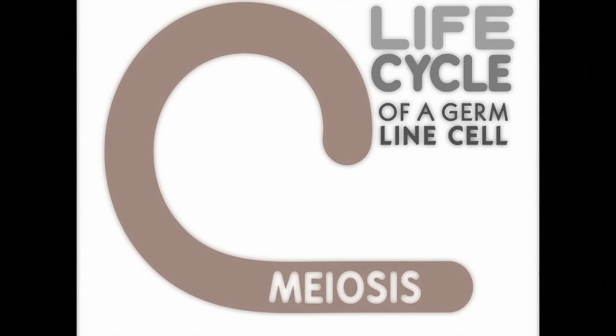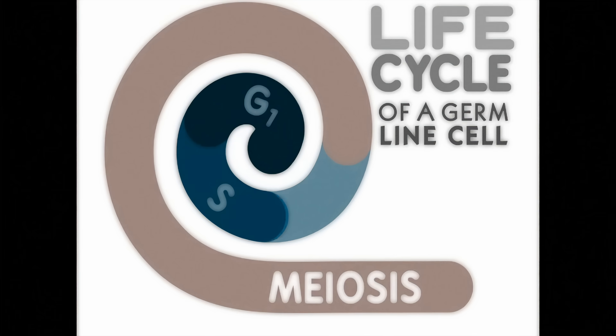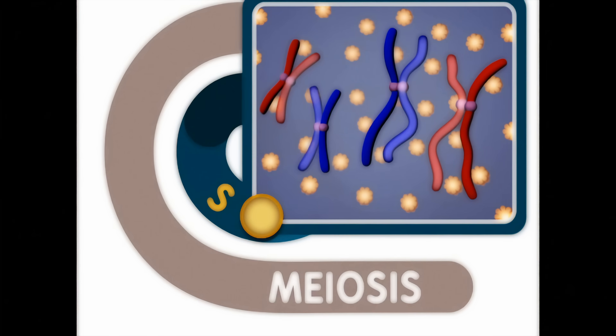Similar to mitosis, the cells also pass through the interphase G1, S, and G2 stages before they enter meiosis. The DNA inside a germline cell is duplicated before meiosis begins during the S phase.